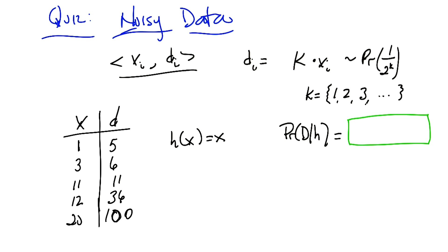Now, why did I choose 1 over 2 to the k? Because it turns out that the sum of all those 2 to the k's from 1 to infinity happens to equal to 1. So it's a true probability distribution. Okay.